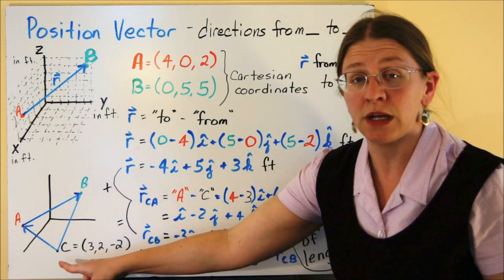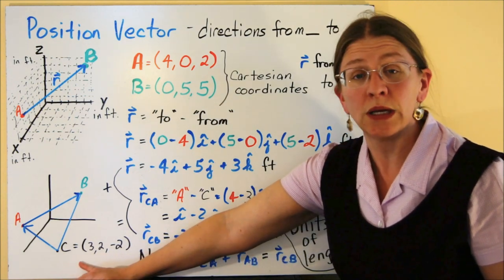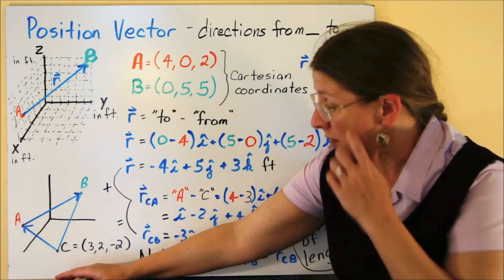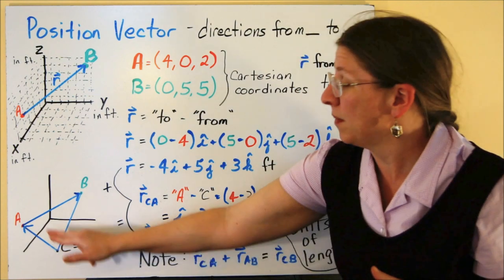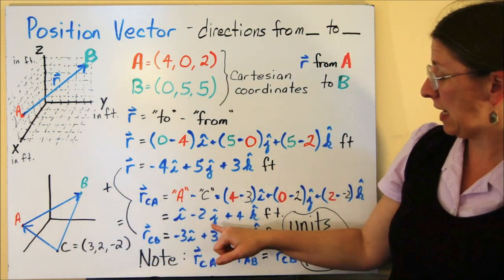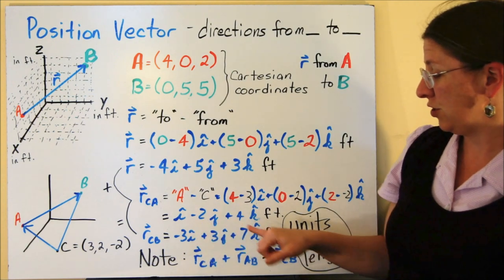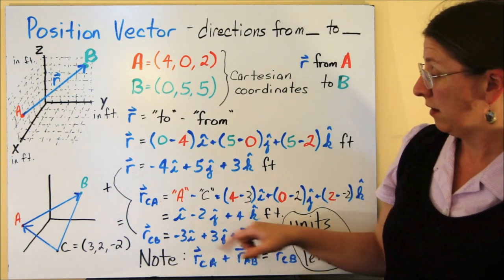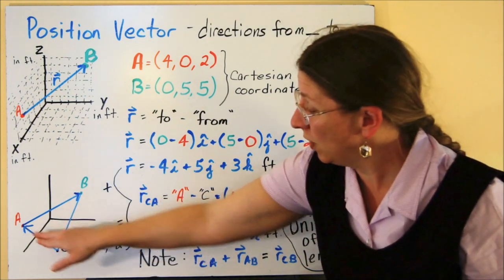Similarly, if you had a triangle down here, just like we did in 2D, we can do a 3D force triangle. The position vector from C to A and from A to B has to be the position vector from C to B. So from C to A, I would have i minus 2j plus 4k, that would be the to minus the from.